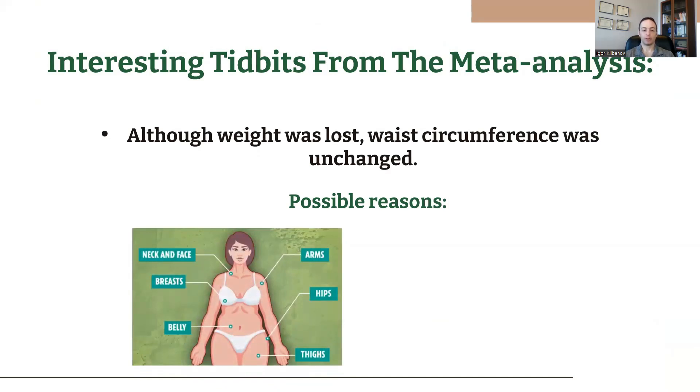They might have lost body fat from elsewhere. They might have lost body fat from their buns, their thighs, their hips, their arms, etc., but not necessarily their waist circumference. And remember from previously in this video that it's really only women who lose body fat from green coffee bean extract. Women, pre-menopausal women tend to store fat more so in their buns and thighs compared to their belly. So that's one possible reason.